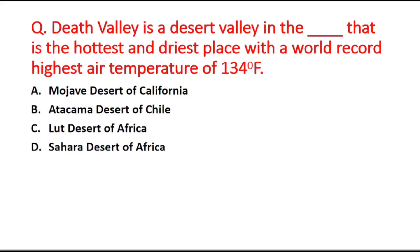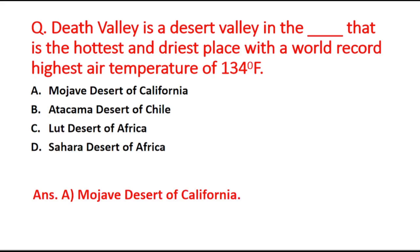Next question: Death Valley is a desert valley that is the hottest and driest place with a world record highest air temperature of 134 degrees Fahrenheit. Option A is Mojave Desert of California, B is Atacama Desert of Chile, C is Lut Desert, and D is Sahara Desert of Africa. The right answer is option A, Mojave Desert of California.